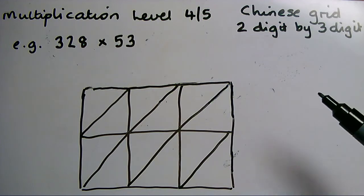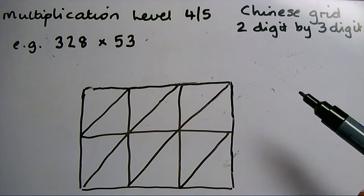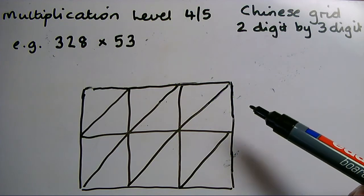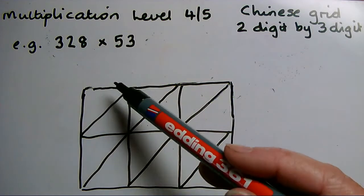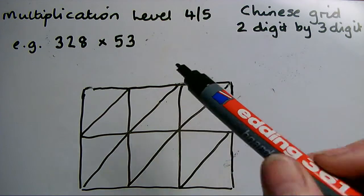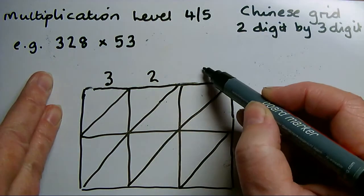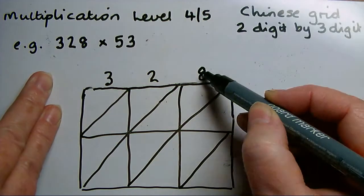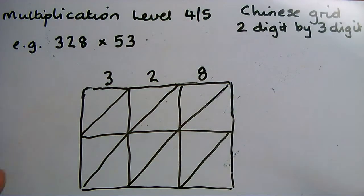The difference is that instead of using place value and splitting 328 into 320 and 8, I simply write the number across the top of the grid with one digit at the top of each column. So immediately the zeros have disappeared.